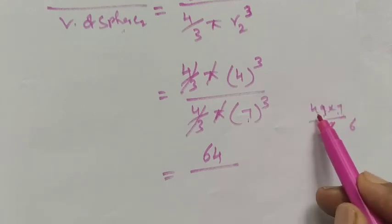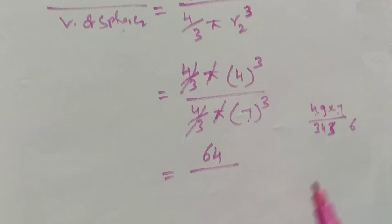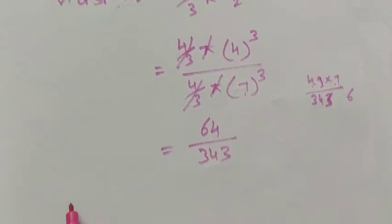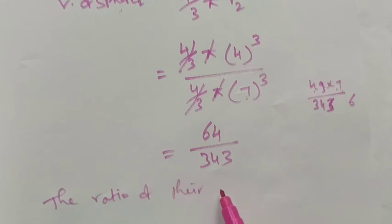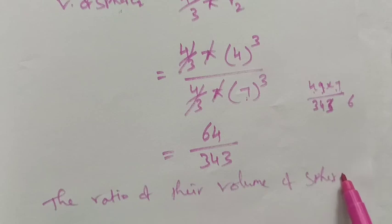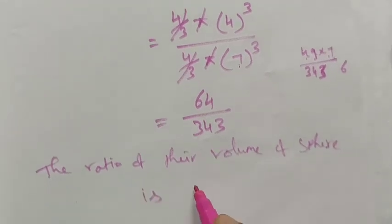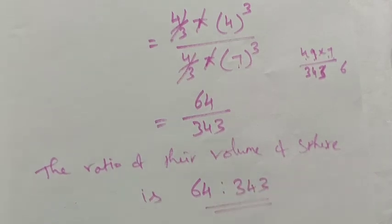7 into 63 is 3 remainder 6, 7 fours are 28 plus 6 is 34, so 343. So the ratio of their volumes, sphere 1 and sphere 2, is 64 is to 343. This is the ratio of the volumes of the spheres. Thank you.